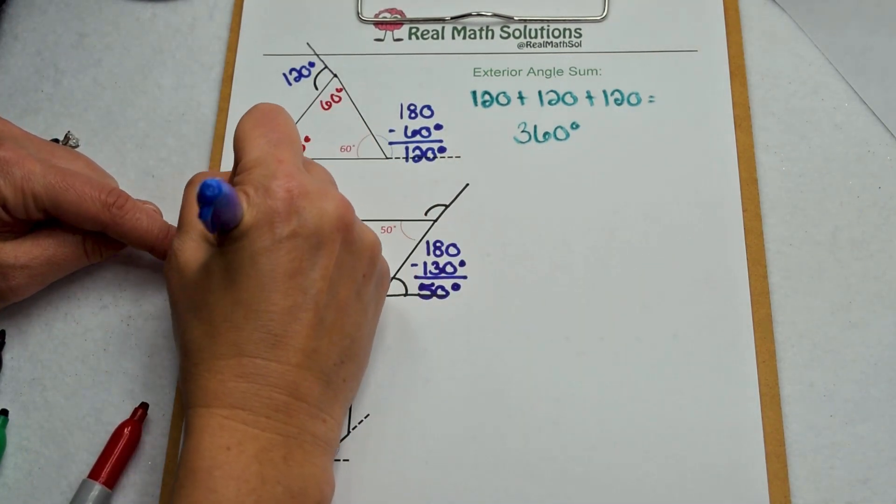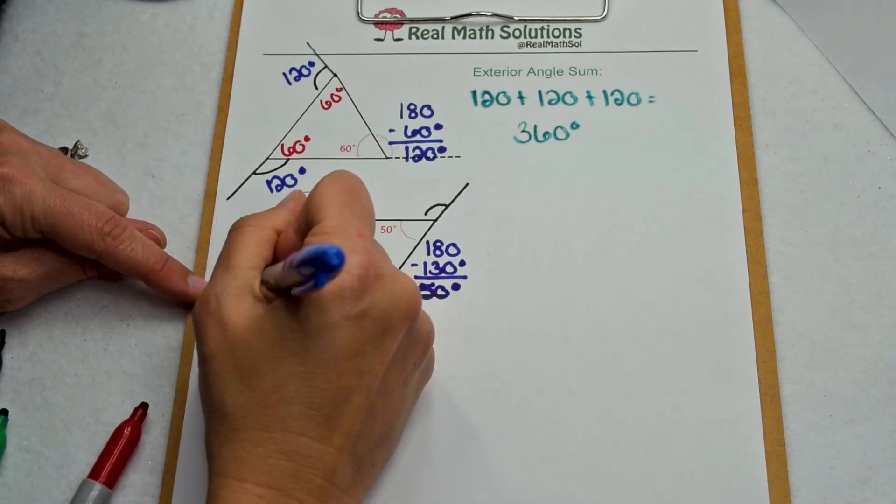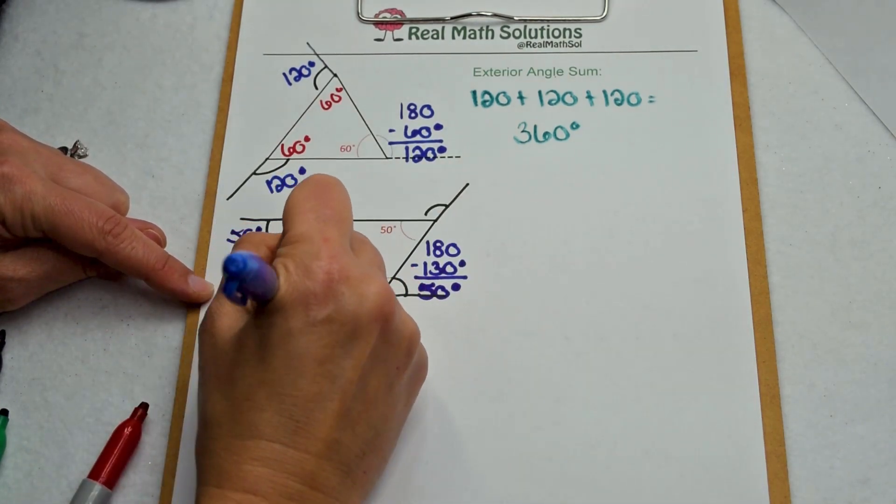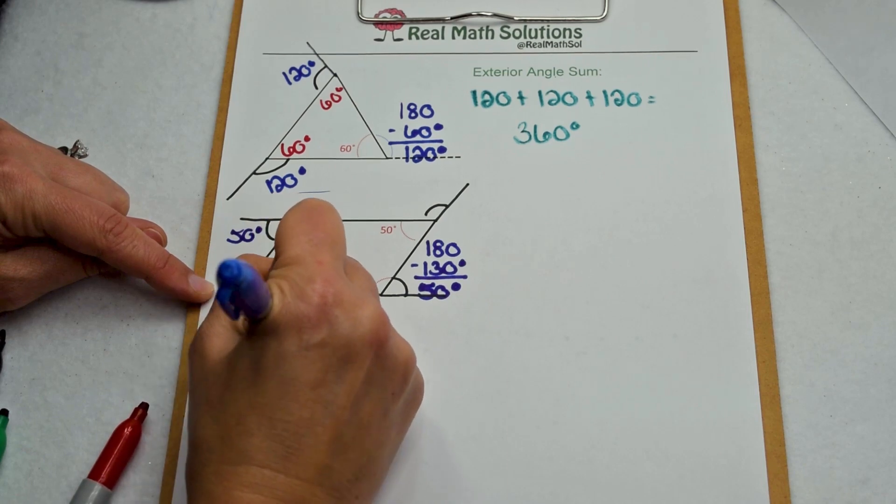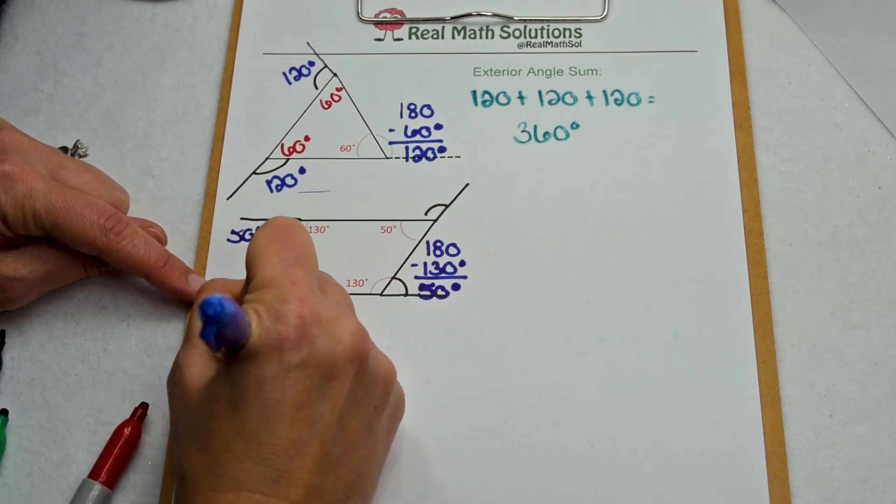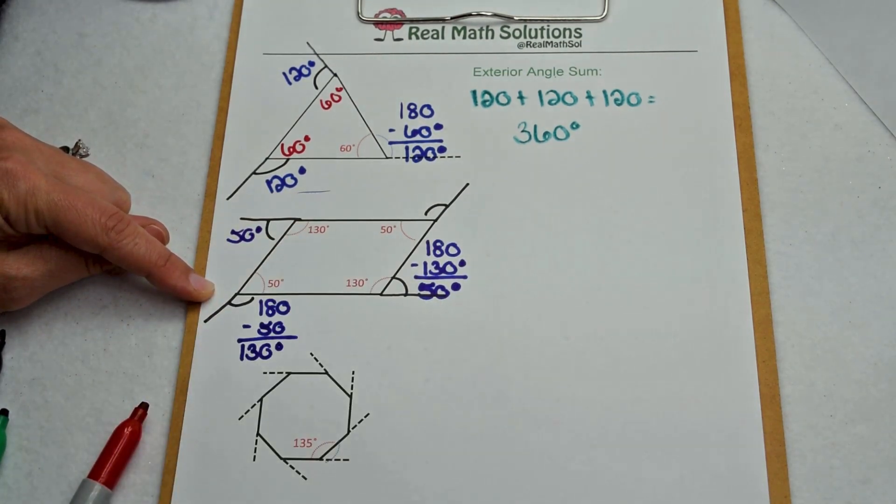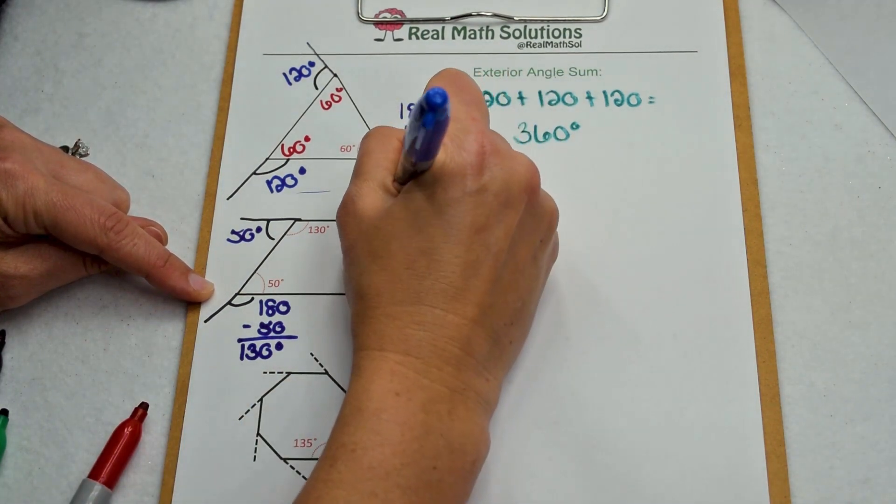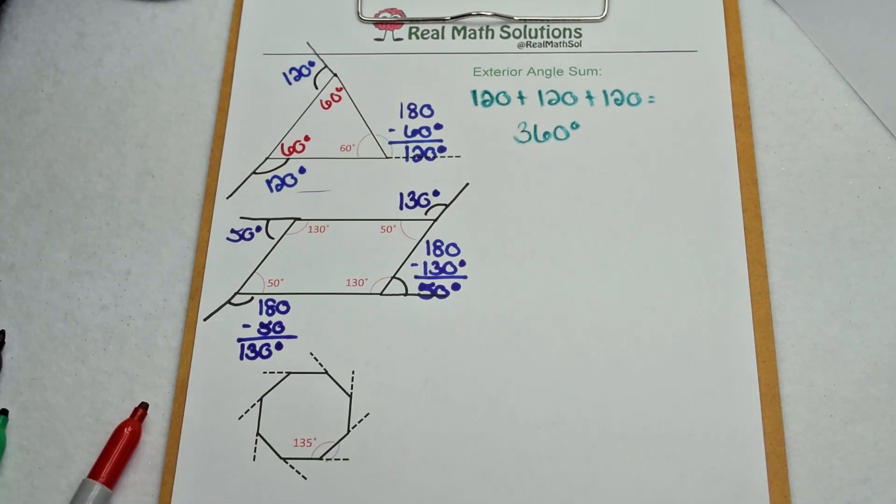Down here, I have an interior angle of 50 degrees. So I can subtract 180 minus 50 and that's going to tell me this exterior angle is 130. So that tells me this one is going to be as well.